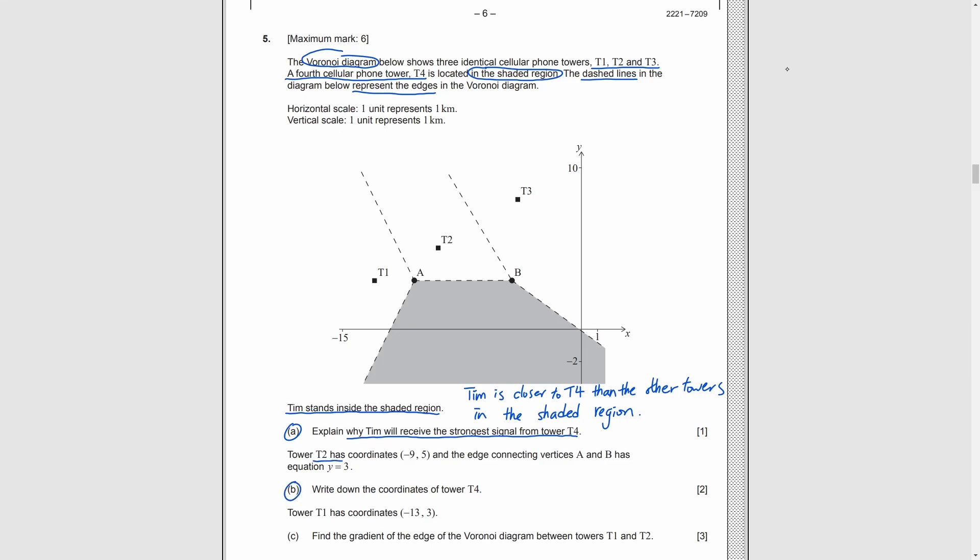Part B, now we know T2's coordinates, which are negative 9 and 5. And the edge AB is y equals 3. We need to find T4. For the distance from any points on edge AB to T2, should be the same as that to T4. As the edge line, y equals 3 is a horizontal line. The line connecting T2 and T4 should be a vertical line. So, the x-coordinate of T2 and T4 should be the same, negative 9. The distance between the T2 and the edge is 5 minus 3, which is 2. So, the y-coordinate of T4 is 3 minus 2, which is 1.